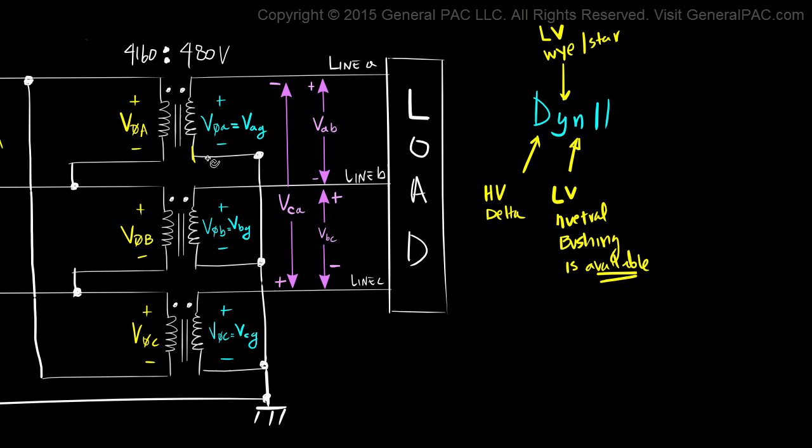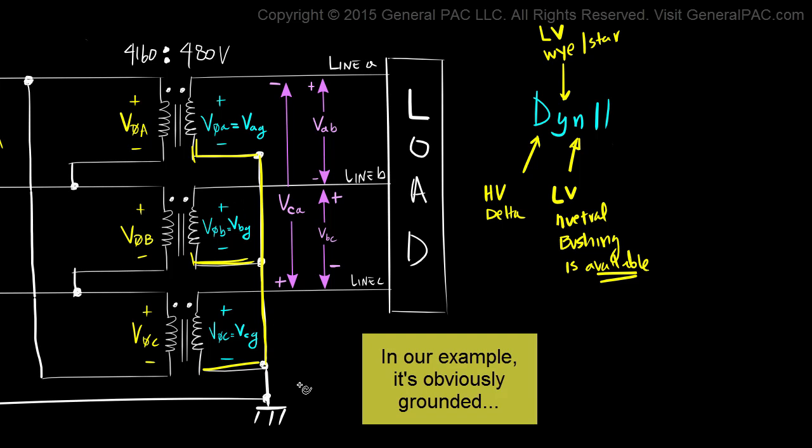Here's that neutral bushing that I'm referring to. So this right here is that neutral bushing. So it's telling us that the bushing is available but it's not telling us that the neutral bushing is actually grounded or not.